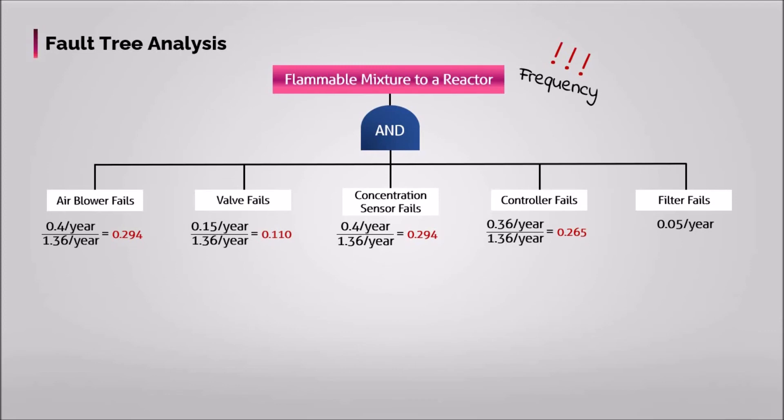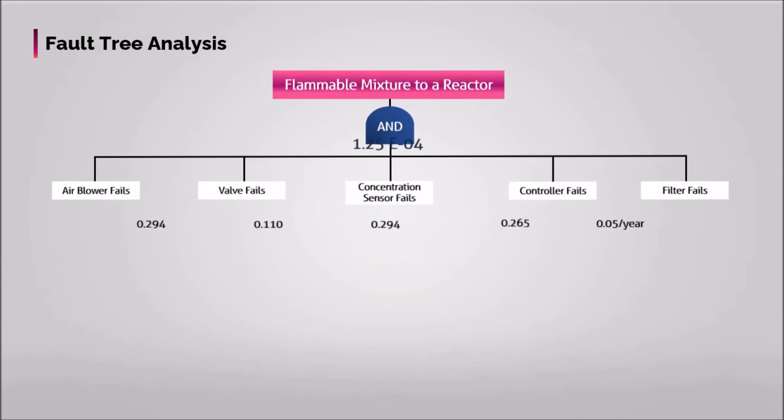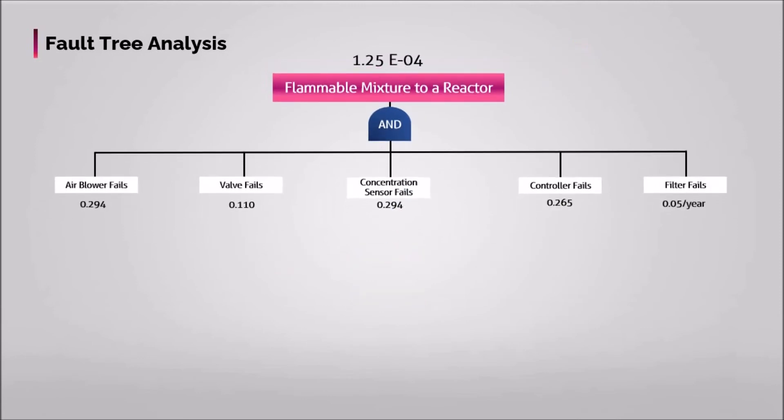Then, to calculate the frequency of flammable mixture to a reactor using AND gate, all likelihoods are multiplied. The results say, within here, the probability of flammable mixture to a reactor is 1.25 by 10 to power negative 4.